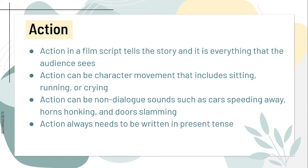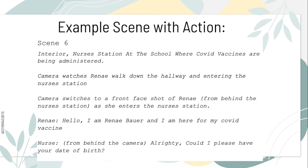Now we'll talk about action. Action on a film script tells a story, and it is everything that the audience sees. Action can be a character movement that includes sitting, running, or crying. Action can also be non-dialogue sounds such as a car speeding away, horns honking, and a door slamming. Action always needs to be written in present tense. Here is an example scene with action.